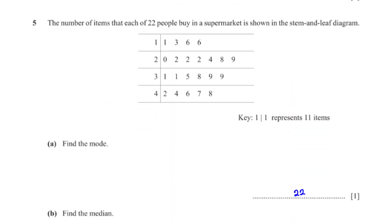The number of items that each of 22 people buy in a supermarket is shown in the stem and leaf diagram. Find the mode. The mode is the most recurring number. From the stem and leaf plot, this number is 22.